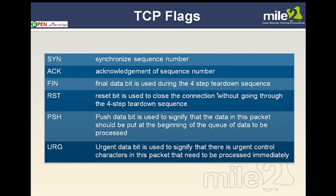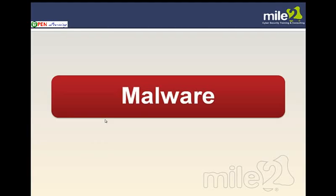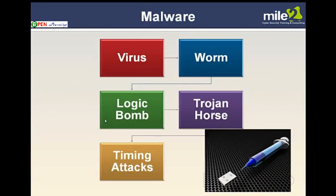Looking at TCP flags: FIN (finish) is the final data bit used in a four-step teardown sequence. Reset is where you basically close down the connection non-gracefully — without going through the four-step teardown sequence — a sudden abort, a sudden stop of the connection. Push: the push data bit is used to signify the data in this packet should be at the beginning of the queue to be processed — put me first. Urgent: urgent data is used to signify there's an urgent control character in the packet that needs to be processed immediately. You mostly see SYN and ACK, but you can find FIN and resets in there too.